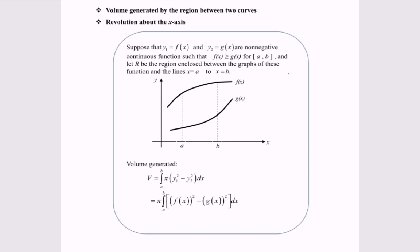Suppose y₁ equals the function f(x) and y₂ equals the function g(x), a non-negative continuous function such that f(x) is greater than or equal to g(x) for the interval a to b. Let R be the region enclosed by the graphs of these functions between the lines x = a and x = b.